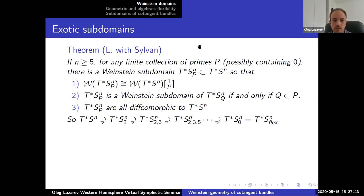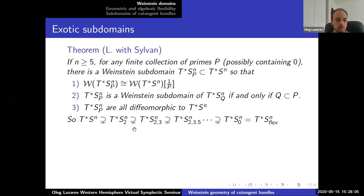When you include zero, you get the flexible one — when P contains zero you always get the same thing. The Fukaya category of a flexible domain is the trivial (zero) category.